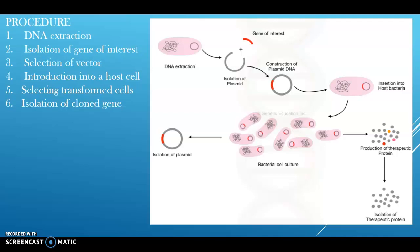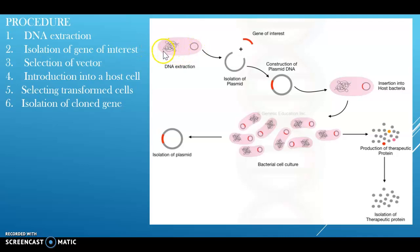After the DNA extraction, it is purified using alcohol-based methods and then proceeded for gene cloning. The second step involved in the cloning process is the isolation of the gene of interest. From the whole set of DNA, the required gene — that is the gene of interest — needs to be isolated.